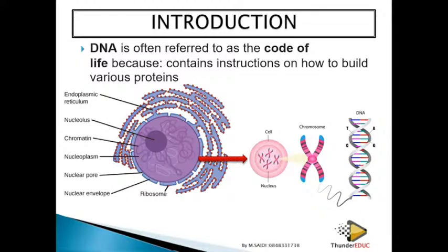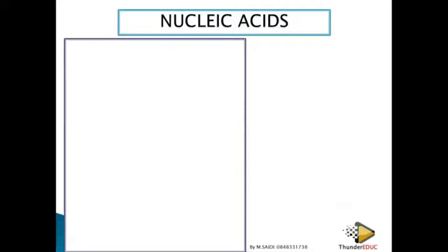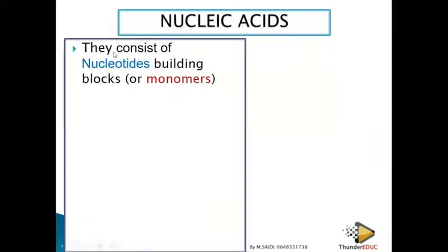Let's look at nucleic acids, since DNA is an example of a nucleic acid. Nucleic acids are acids found in the nucleus, and they consist of nucleotides. Nucleotides are the building blocks — the monomers. In an exam they may ask: what is the smallest unit of a nucleic acid? The answer is a nucleotide. What are the monomers of DNA or of nucleic acids? The answer is nucleotides.